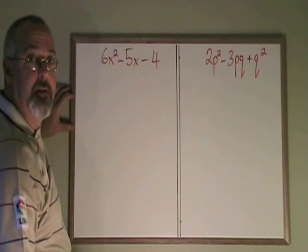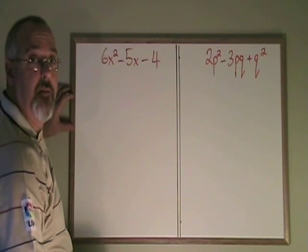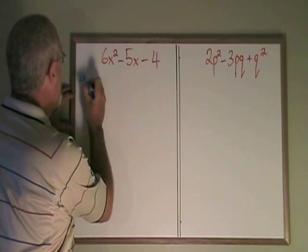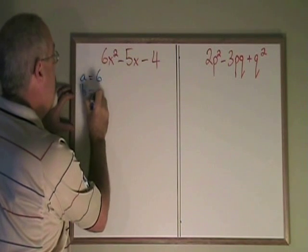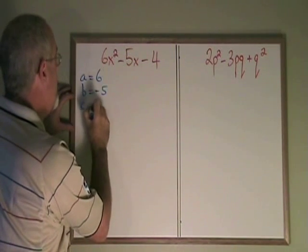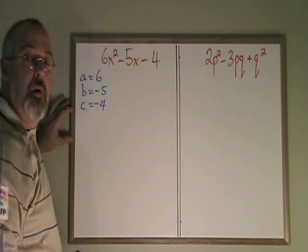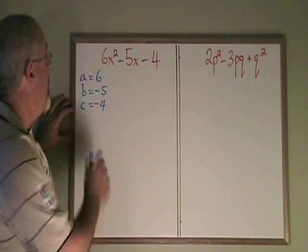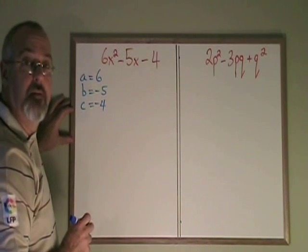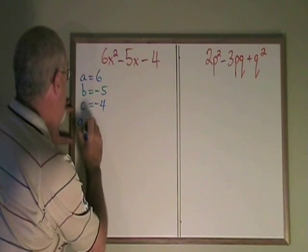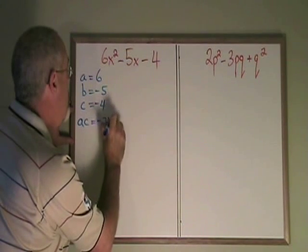The first step is the same. Define your a, your b, and your c. In this case, a is 6, b is negative 5, and c is negative 4. Now we have an extra step. What is ac? a times c is 6 times negative 4, so ac is equal to negative 24.